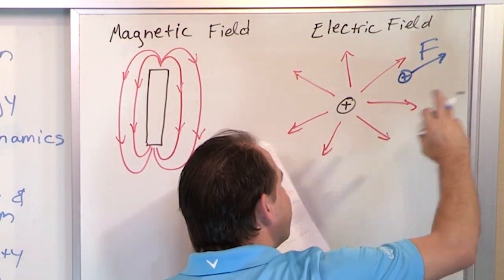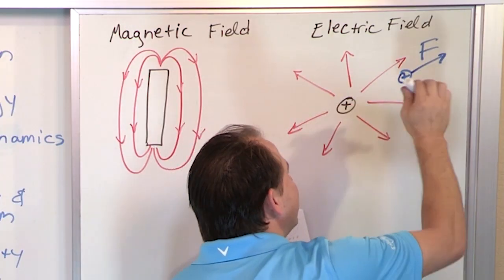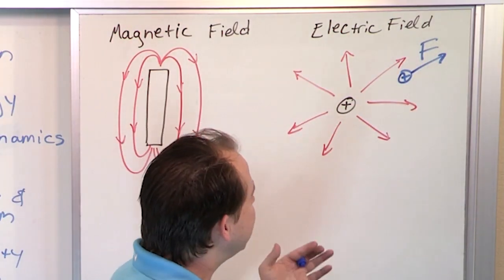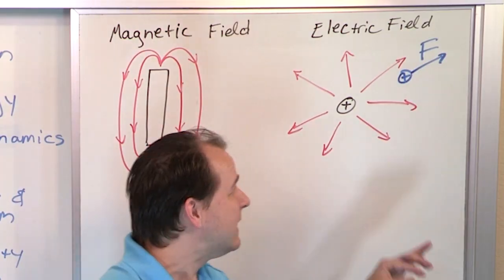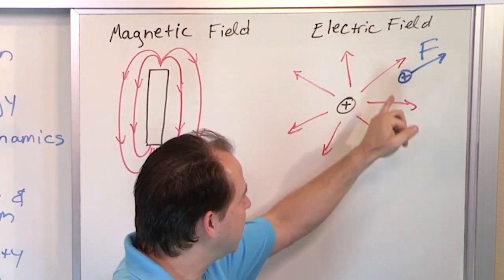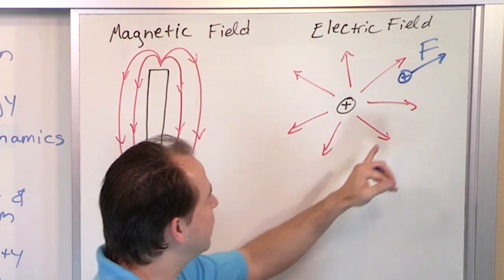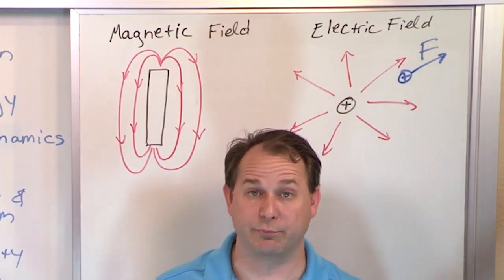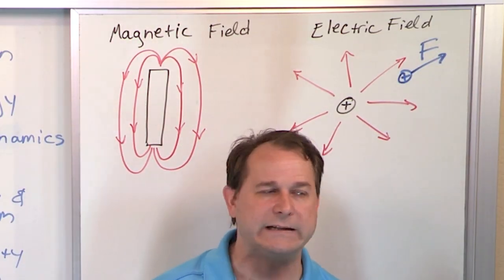Remember, like charges repel and opposites attract. So what we say in physics is that instead of just saying like charges repel, what we say is that this charge generates an electric field and that electric field is what pushes on the proton with a force F. And we're going to learn how to calculate that.